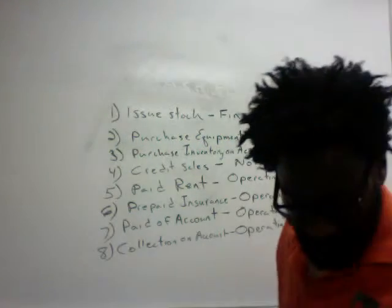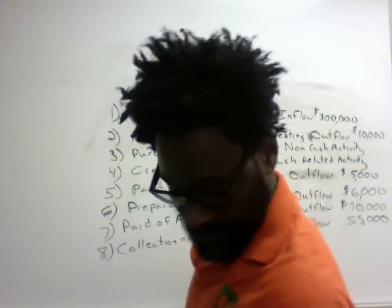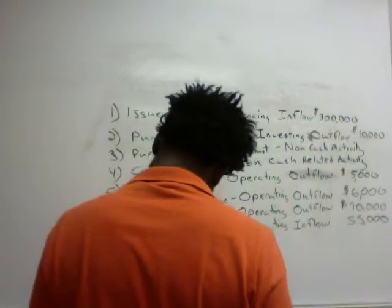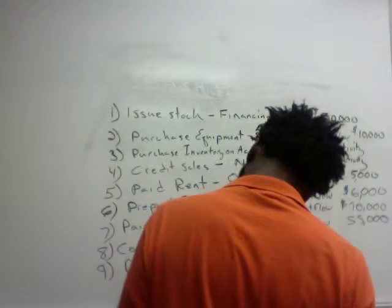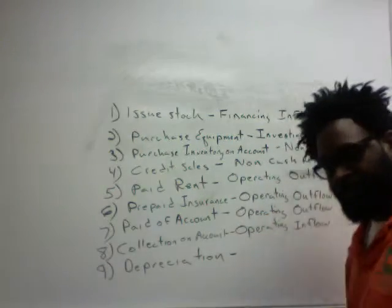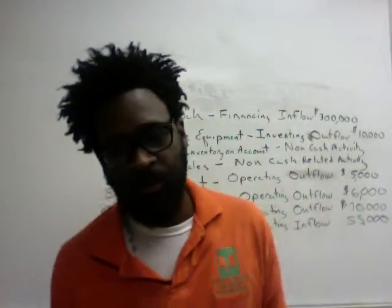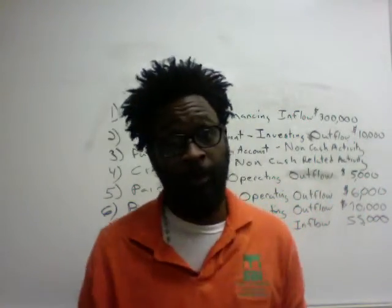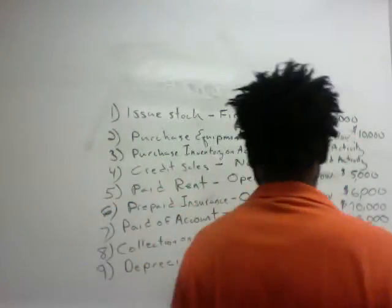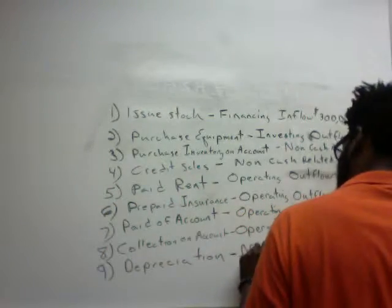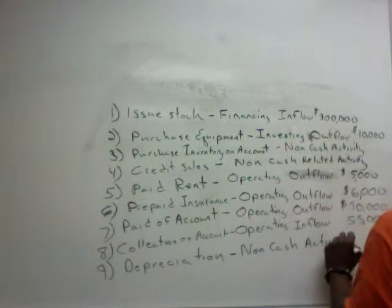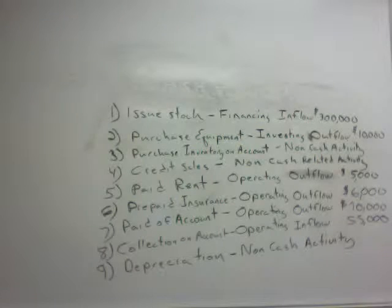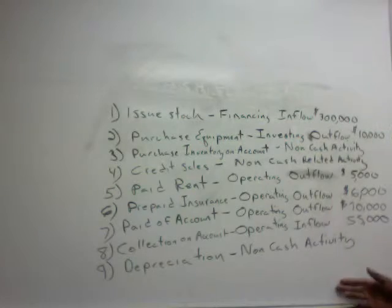Transaction nine: we recorded depreciation. The journal entry is debit depreciation expense, credit accumulated depreciation. However, did it affect cash? Absolutely not. That's why it's a non-cash activity — no cash was involved with depreciation. Understanding these classifications is your first step in creating a cash flow statement.